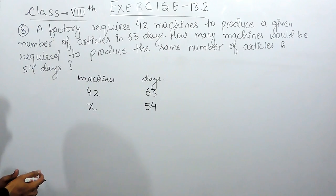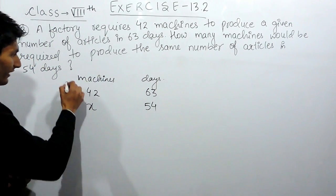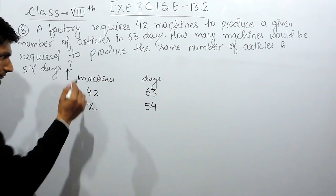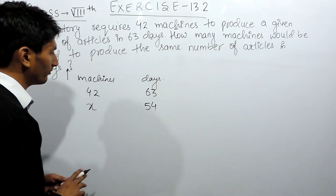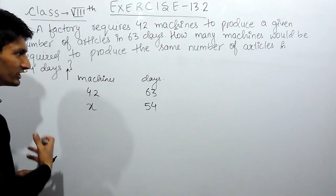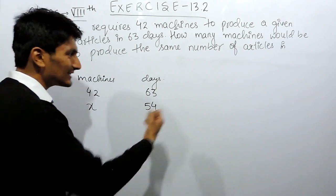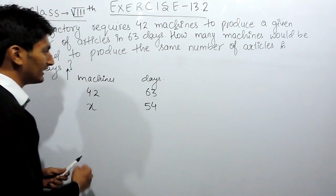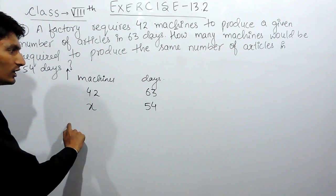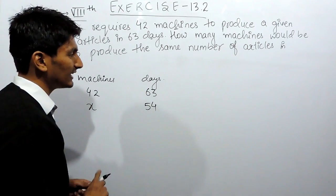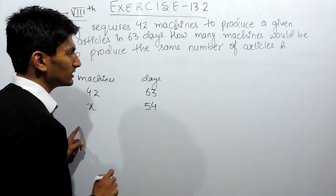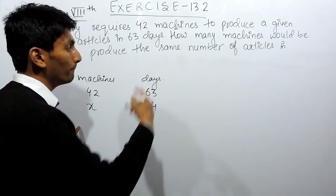Now let's check whether this is a direct proportion or indirect proportion. For that, if I increase the number of machines to complete this work, obviously if I have more machines, I take less days to complete the work. And if I have less machines, the number of days taken by these machines to complete this work will be more.